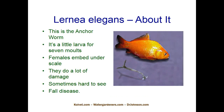I wanted to mention about anchor worm: besides telling you that you don't really have to pull them off, when the Dimilin kills them they just kind of fall off or rot away. I think when people pull off the anchor worm, they're actually creating more stress by handling the fish than they would if they just let the fish shed the anchor worm as the worms die.